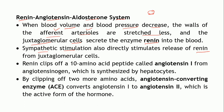Renin clips off a peptide called angiotensin I — a 10 amino acid decapeptide — from the precursor angiotensinogen, which is synthesized by hepatocytes and normally present in blood. From angiotensin I, two more amino acids are clipped off by angiotensin-converting enzyme (ACE), resulting in formation of angiotensin II — an octapeptide — which is the active hormone.